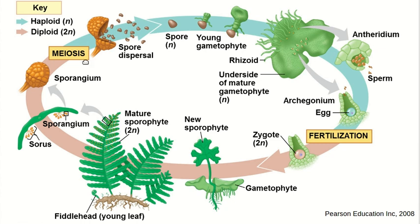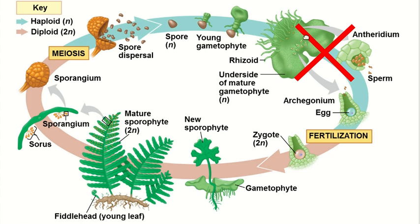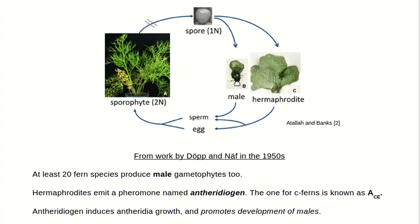You'll find countless versions of this same cartoon on the internet. It turns out they're all wrong. The gametophyte depiction is an oversimplification. In the 1950s, some 20 species were found to produce not just hermaphrodites, but also male gametophytes. The male gametophytes, as the name suggests, produce only antheridia and no archegonia. Furthermore, the hermaphrodites were found to emit a pheromone which, when a developing gametophyte detected it, would tend to cause that gametophyte to develop into a male gametophyte and not a hermaphrodite gametophyte.